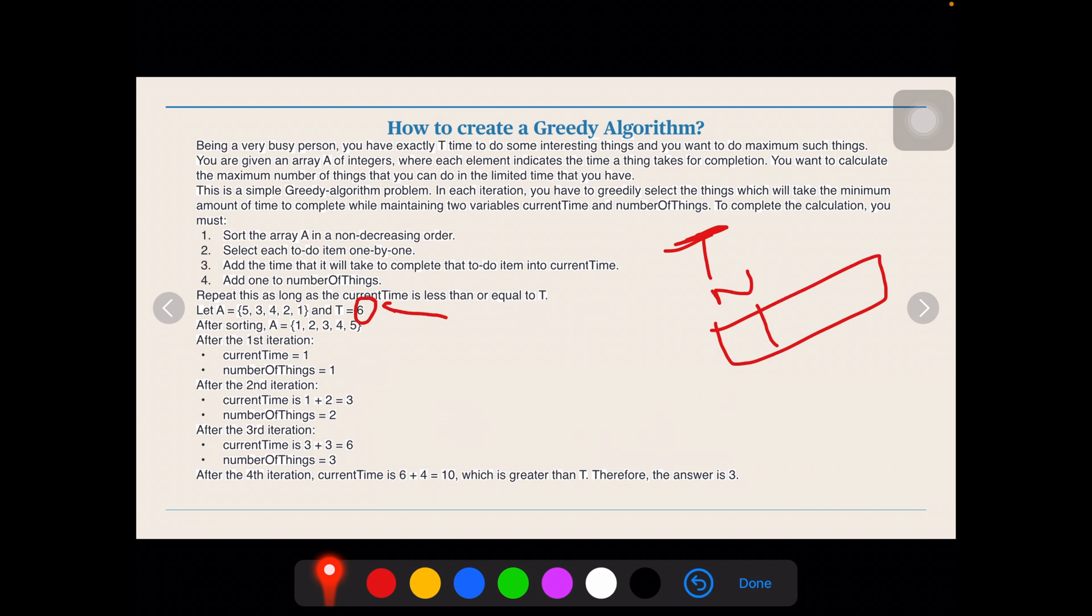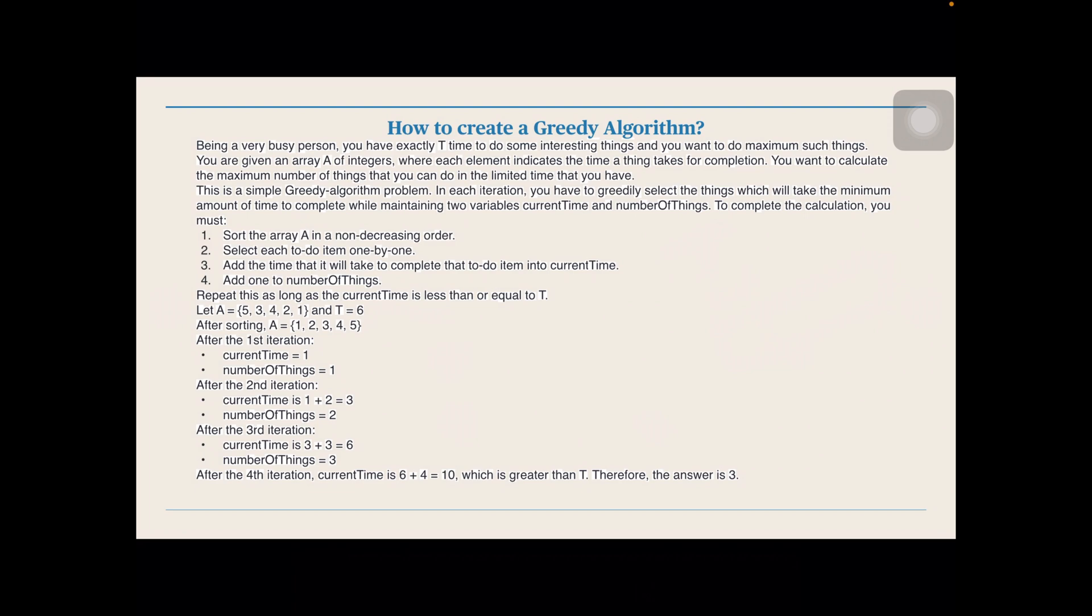So, there is a maximum of 3 things that you can do in a given time of 6 hours according to this particular question. In this algorithm, we used greedy. We were greedy that we have to exactly take the minimum amount of time that a work needs to arrive at a global maximum, maximum being the maximum amount of tasks that you want to perform. Now, what is the application of greedy?